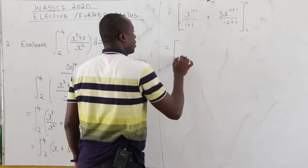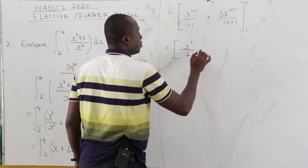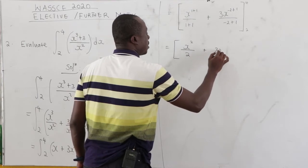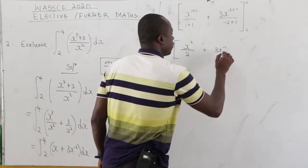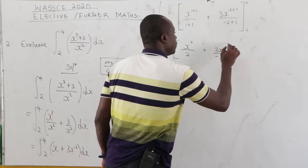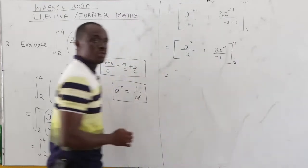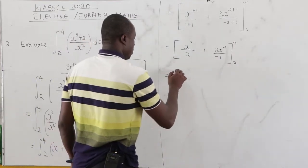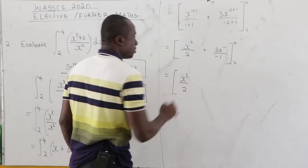Now let's simplify this. So from here, we have x to the power 2 all over 2 plus 3x. Now negative 2 plus 1, that is negative 1 all over negative 1. Now our limit, we have 4, 2. Now from here, we have x to the power 2 all over 2.